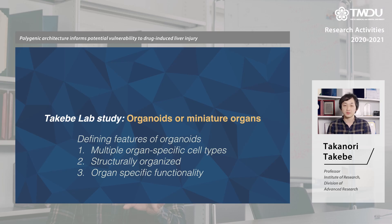Organoids have multiple characteristics. First, there are multiple organ-specific cell types, and secondly, they are well organized in a manner we see in our body. Because of that, organoids have organ-specific functions — for example, in the liver, hepatocytes metabolize a number of different drugs to initiate functions or prevent toxicity or damage.